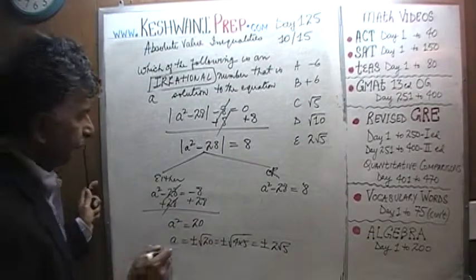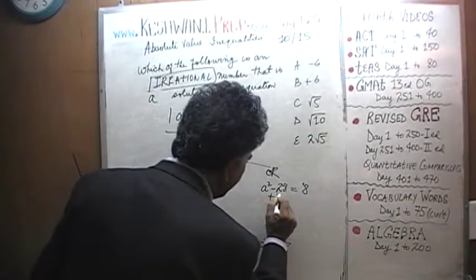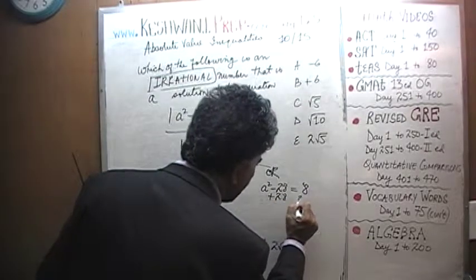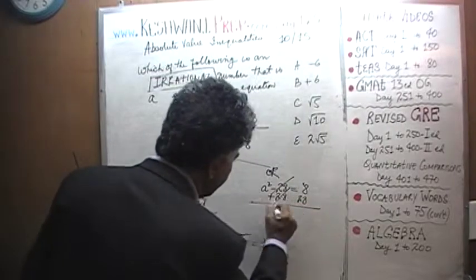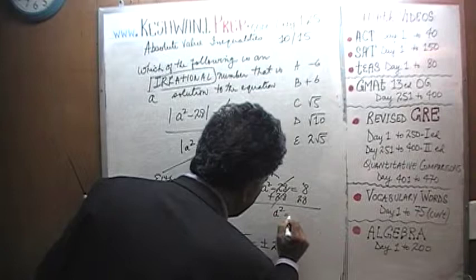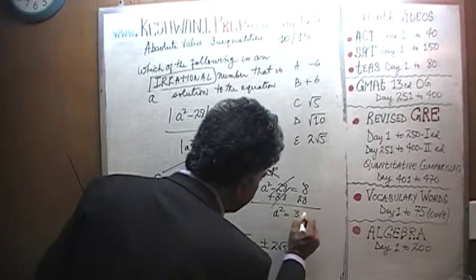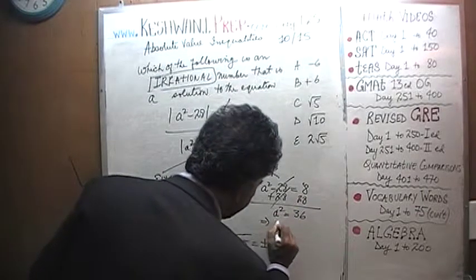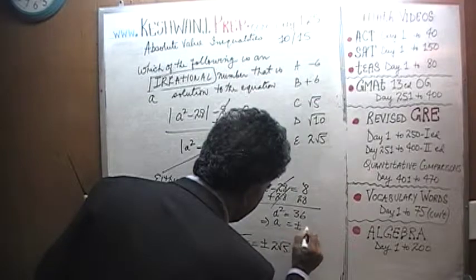Let's see what we get here. Let's add 28 to both sides. Negative 28 kills the positive 28, just like before. And a squared equals 28 plus 8, which is 36. That implies that a has to equal positive or negative 6.